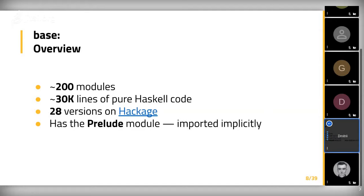Prelude is just a module in base, but it has a special role: all functions available to you implicitly by default are actually functions and types exposed by the Prelude module. If you don't write any imports, all you have is what is exposed by Prelude. This is the implicit scope of base, available to you without any explicit imports.